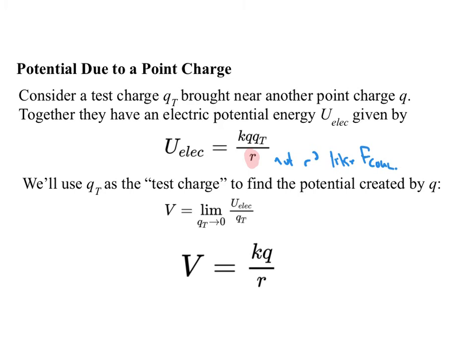Since QT is our test charge, then we take this definition. We say, take the limit of U electric over QT, but U electric over QT, the QT just drops out, so the limit doesn't really matter. And we get that the voltage of a point charge is KQ over R, where R is the distance to the point charge from the point you're talking about.